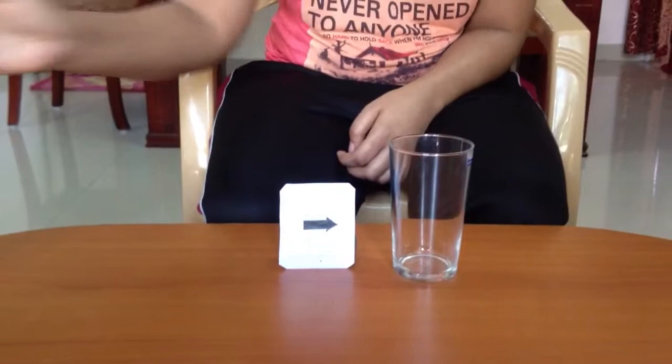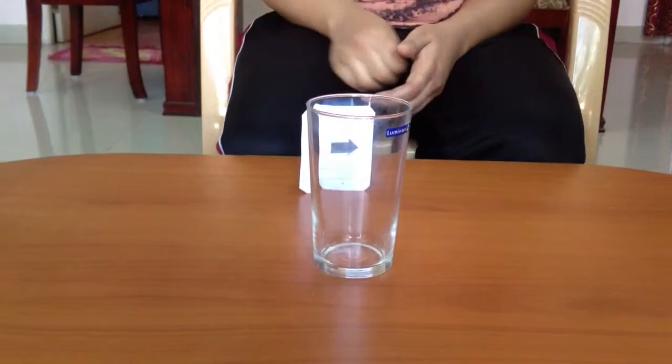Keep the glass in front of the arrow. We see the arrow through the glass pointing towards the right.